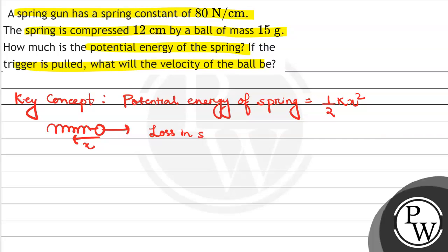So the loss in spring energy equals the gain in kinetic energy. Here we have a spring constant which is 80 newton per centimeter. If we convert it to SI units, that's 8000 newton per meter.